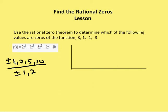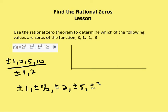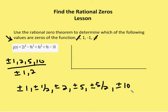So the possible rational zeros are going to be the factors of the constant over the factors of the leading coefficient. We have plus or minus one, plus or minus one-half, plus or minus two, plus or minus two over two which is one, plus or minus five, plus or minus five-halves, plus or minus ten, and plus or minus ten over two which is five — we already have that. We know that three and negative three are not possible rational zeros, so we have to find out if one or negative one is a possible rational zero.